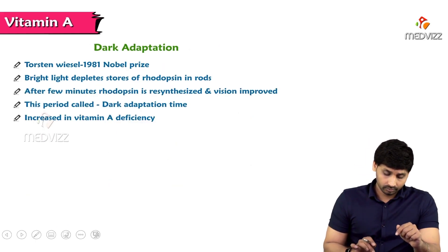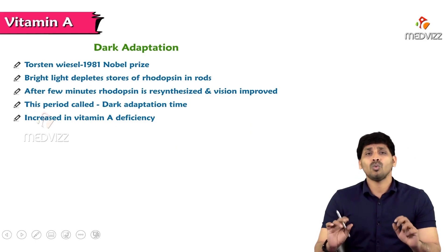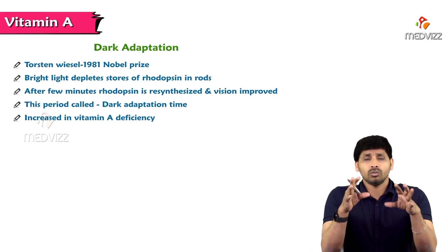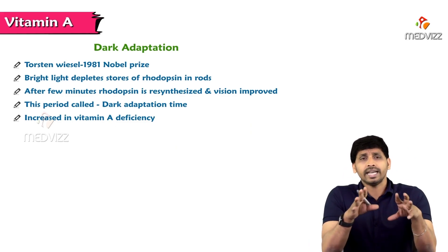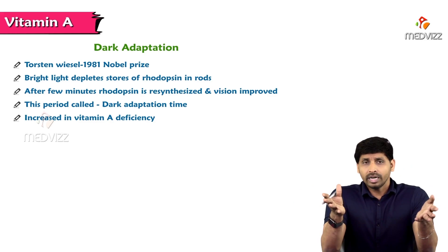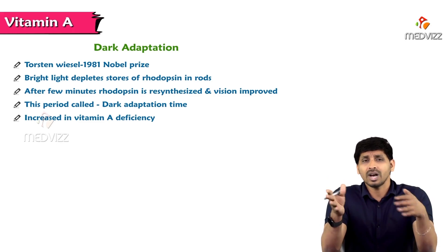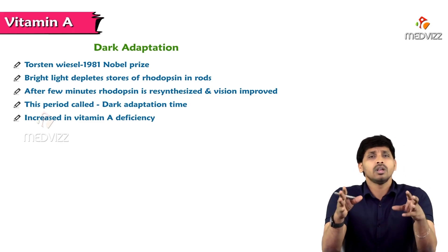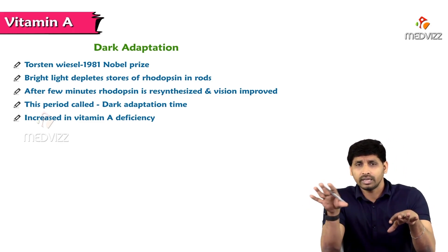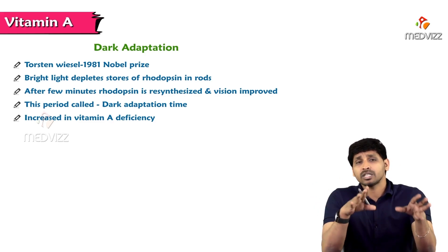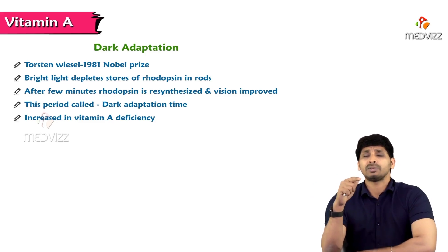Dark adaptation time refers to the time needed to adapt to darkness. Rhodopsin is present in rod cells. If you are in daylight and suddenly enter a dark room, you cannot make out anything for a few seconds. This period depends on how fast your rhodopsin is regenerating — after a few seconds, you begin to perceive things in low light.